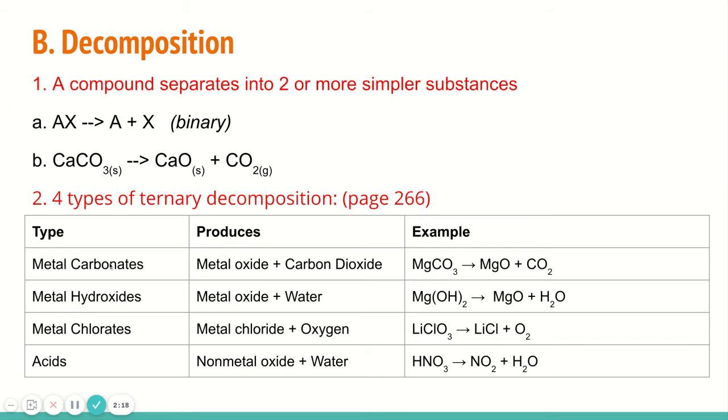Anytime you have a metal with a carbonate, so that's what you see in our example of calcium carbonate, the products are always going to be the metal with an oxide, so a metal oxide, and then carbon dioxide as the other product. Whenever you have any metal with a hydroxide, so hydroxide is OH, you can see the example in the table down below, magnesium with hydroxide will produce again a metal oxide, except this time your other product is going to be water.